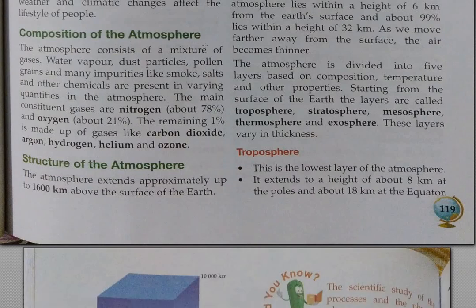The atmosphere is the composition of the atmosphere. The atmosphere consists of a mixture of gases, water vapor, dust particles, pollen grains, and many impurities like smoke, salt, and other chemicals, present in varying quantities in the atmosphere.